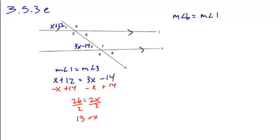Now it's just a matter of substituting that in. It can be in either expression, they should both yield the same value. I'll use angle 1 since it's easier. x plus 12, substitute 13 in for x and solve. We get 25.